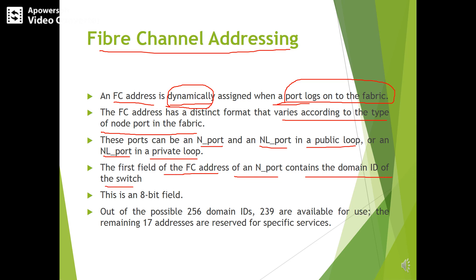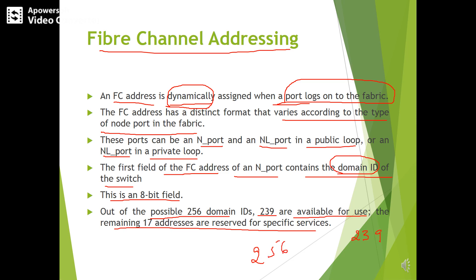The first field of the FC address of an N port contains the domain ID, which is an 8-bit field. Out of the possible 256 domain IDs — that is 2 to the power of 8 — only 239 are available for use. The remaining 17 addresses are reserved for specific services.